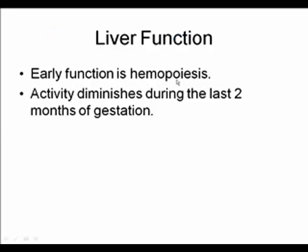Early on, the liver is involved in hematopoiesis, so it is rather large relative to the body cavity. The hematopoietic function decreases over fetal life, and by the last two months of gestation it diminishes and moves toward the bone marrow for the hematopoietic cells found in the adult.